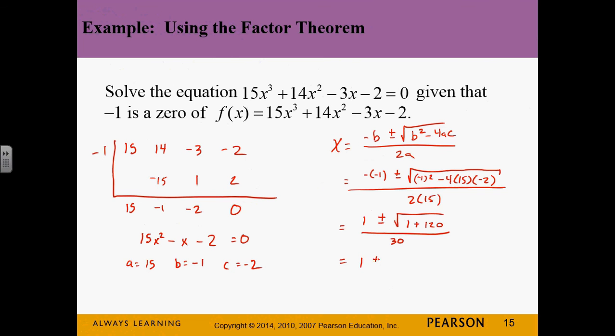So, that gives us 1 plus or minus the square root of 121 over 30. We went too fast. Slow me down. So, 1 plus 11 gives us 12 over 30. 1 minus 11 gives us negative 10 over 30. Right? It's two different answers. And then we simplify those answers. This becomes 2 fifths. This becomes negative 1 third. So, there are the other two solutions.